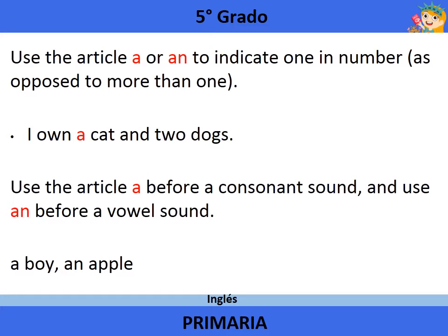Use the article A before a consonant sound and use AN before a vowel sound. Example: a boy, an apple.